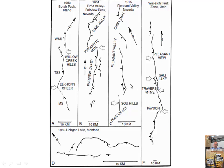The sizes of these events — the biggest is a 7.5; the rest are 7.0, 6.9, 7.3. It's hard to get a magnitude 8.0 normal faulting event because the ruptures get stuck — they can't go all that far.